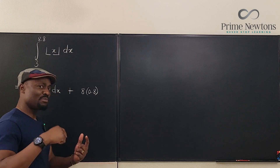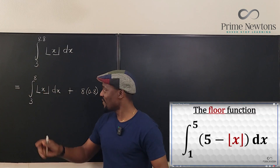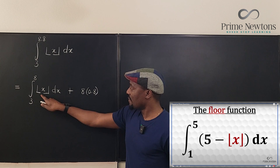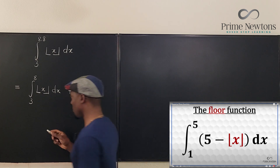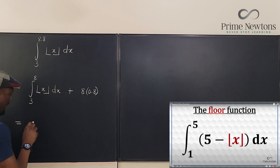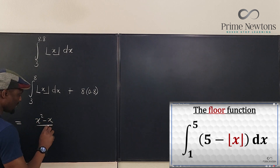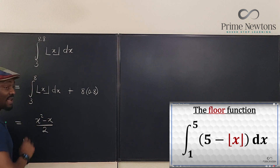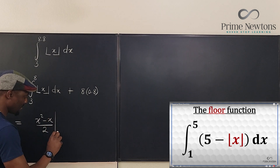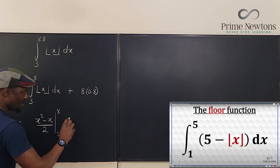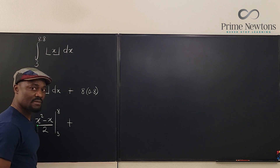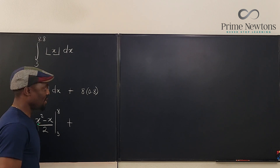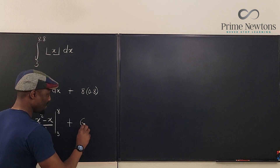Remember in a previous video I showed you that if you integrate the floor of x, the antiderivative is always x squared minus x, divided by 2. You evaluate that from 3 to 8, and then we're going to be adding 8 times 0.8 — that's 6.4.